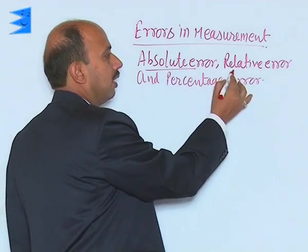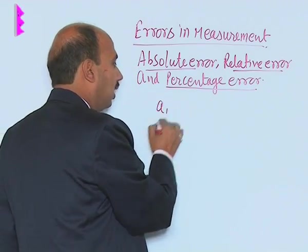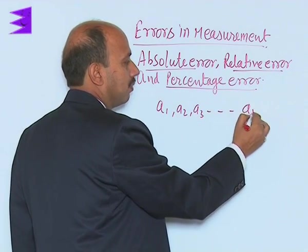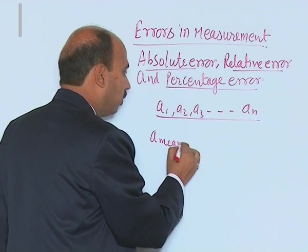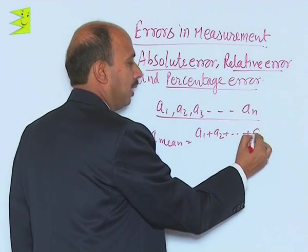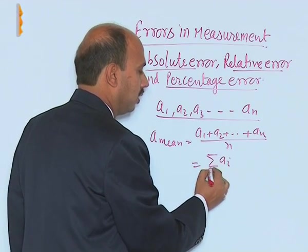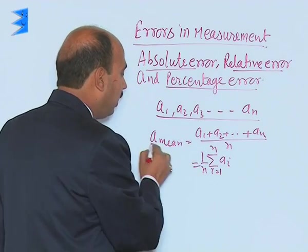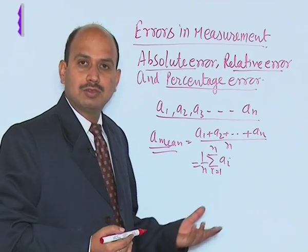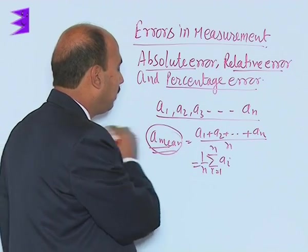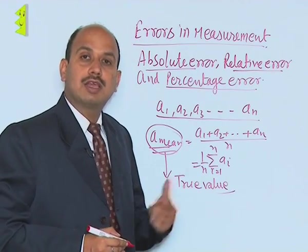Now, absolute error, relative error, and percentage error. Suppose you are measuring a quantity and you get measurements a1, a2, a3, ... an. You have measured the quantity n times. You can take their mean: a_mean = (a1 + a2 + ... + an) / n, which can also be written as (1/n) × Σai for i = 1 to n. By taking the average, we can reduce random errors. This a_mean is considered the true value when no true value is given.